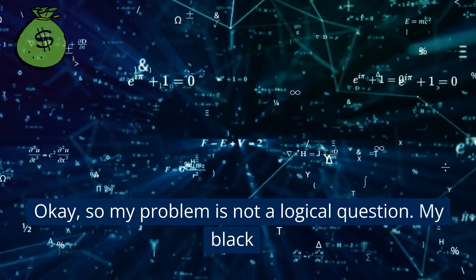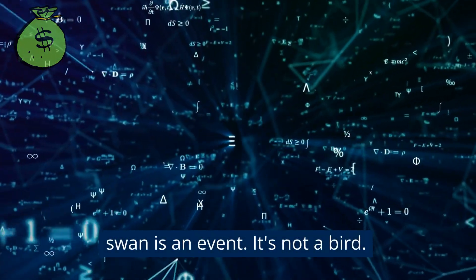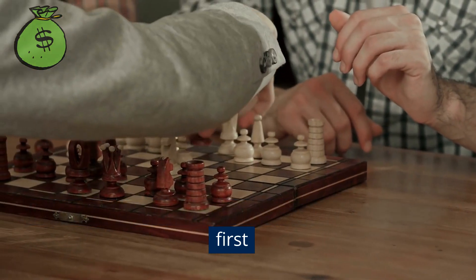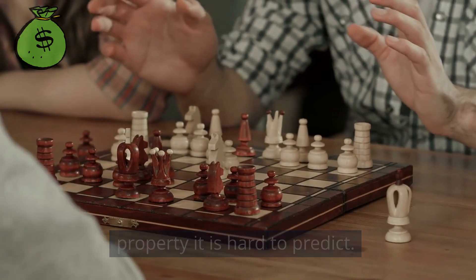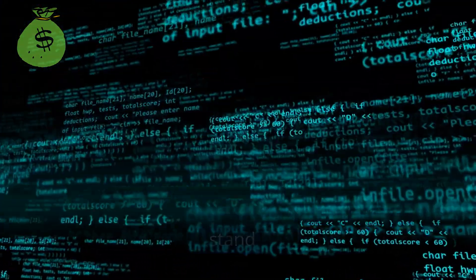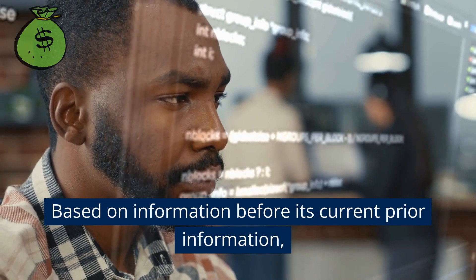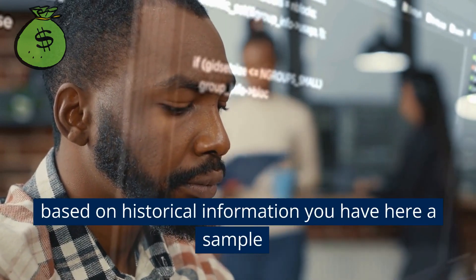So my problem is not a logical question. My black swan is an event, not a bird. It's an event that has three properties. The first property: it is hard to predict, very difficult to predict based on information before its occurrence, based on prior information, historical information.